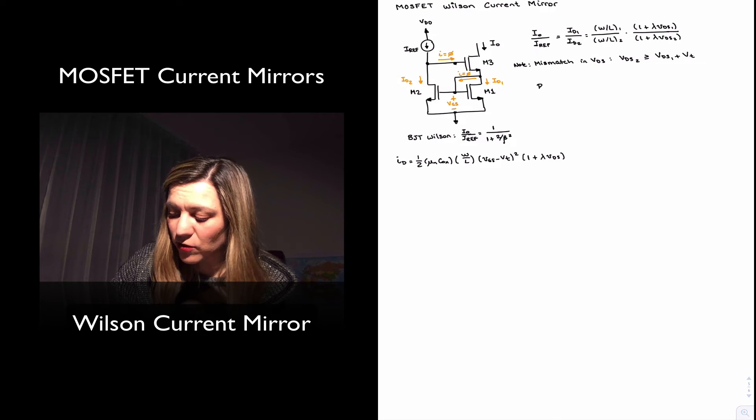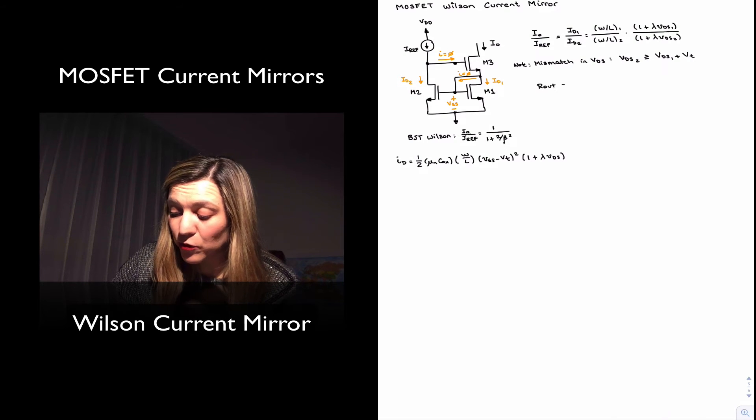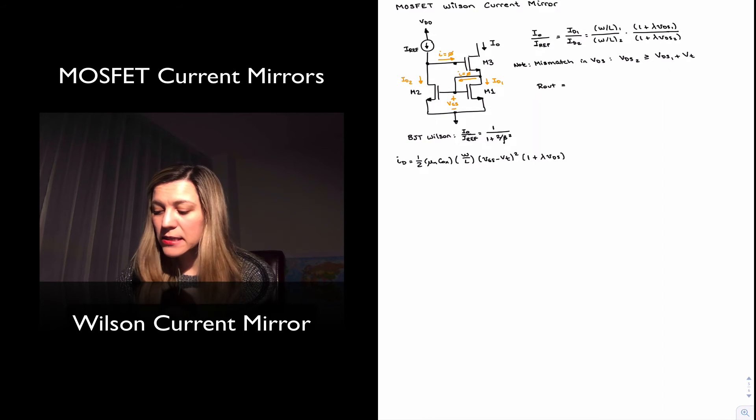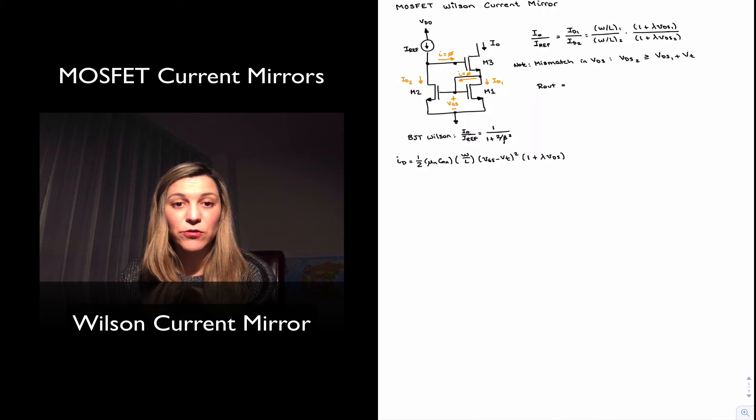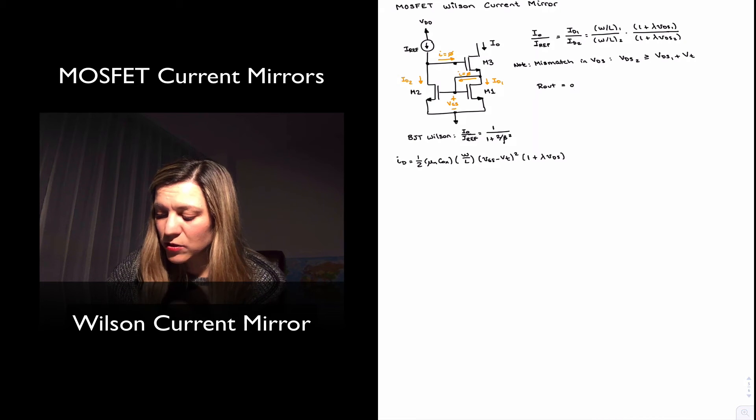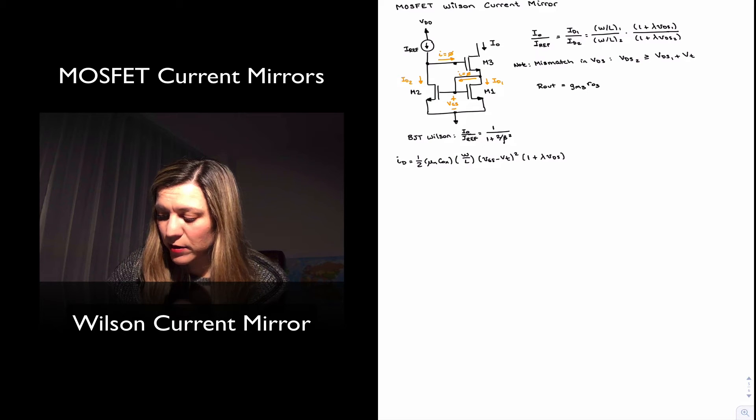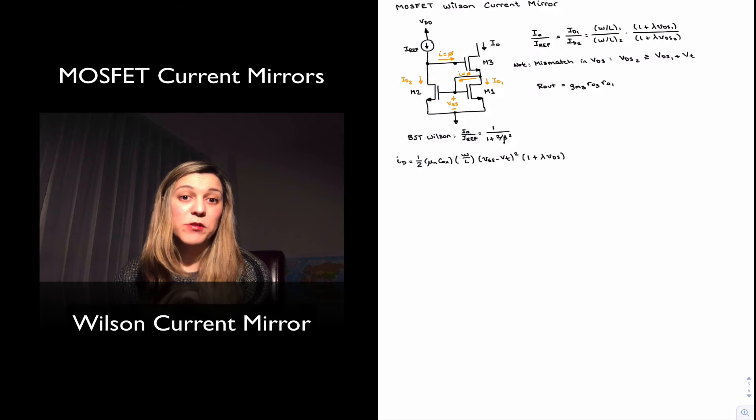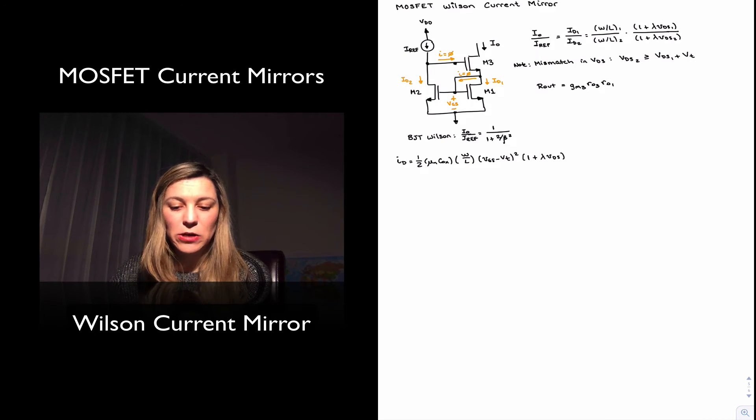The output resistance for this circuit is improved with respect to the output resistance for the basic mirror. The output resistance for the basic mirror was just little r_o of the output transistor. And in this case, the output resistance is increased by a factor of gm times little r_o. And so the actual output resistance will be gm3 times r_o3 times r_o1. So basically gm3 r_o3 times better than the basic current mirror.